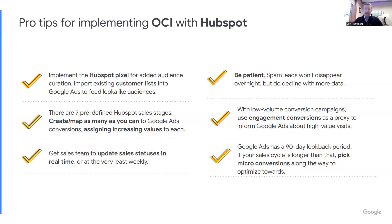First pro tip: implement the HubSpot pixel. If you're using Google Analytics — GA4 or Universal Analytics — you're collecting remarketing audiences, but adding the HubSpot pixel takes it further. You can identify actual revenue-generating contacts who've made it through your pipeline and feed that data back to Google as lookalike and custom audiences for ad targeting.